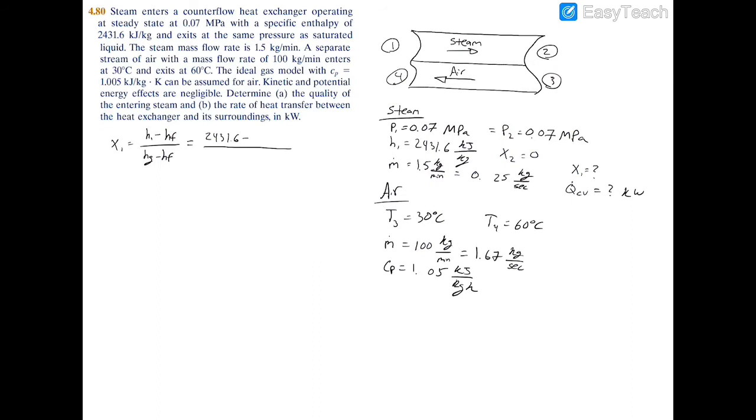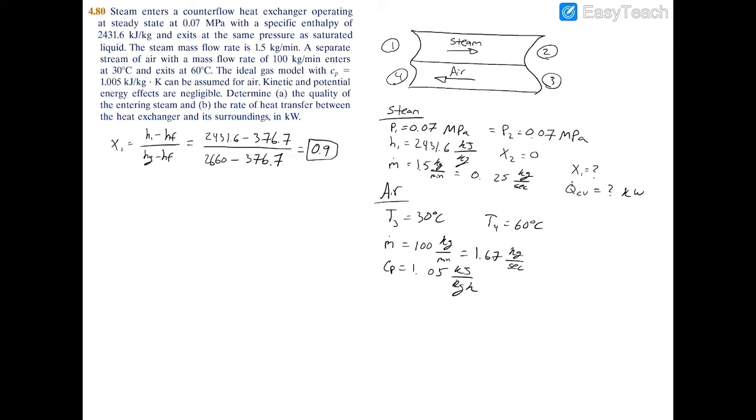So therefore we can use hf is 376.7 and hg is 2660. So we can fill out the rest of this formula as 376.7 on the top and 2660 minus 376.7 on the bottom, and this all equates to the quality being 0.9. And that actually makes sense because steam should be closer to being a saturated vapor, and also we're much closer to the saturated vapor content rather than the saturated liquid content.